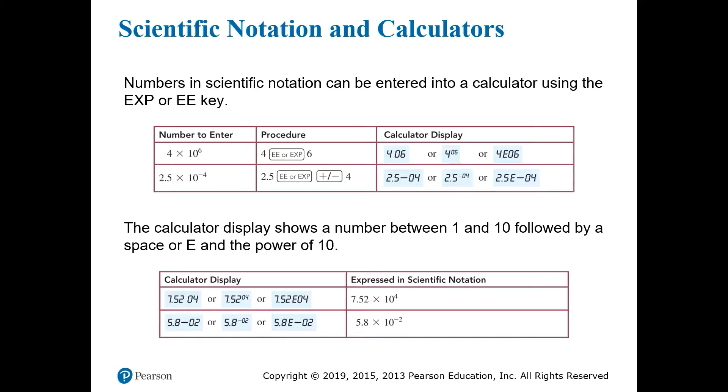On most scientific calculators, the key that you need for scientific notation is labeled either exp or ee. This key is used in place of typing out 10 to the power, or 10 carat. The way it works is that you first enter the coefficient, then you press the exp or ee key, and then you simply enter the exponent for the power of 10 without putting in the 10 itself. Remember, you use the exp or the ee key instead of typing out the 10.